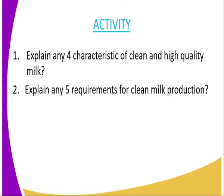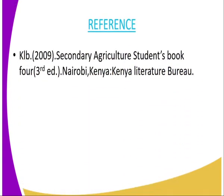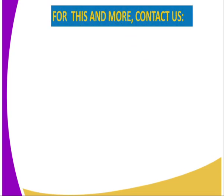We have come to the end of today's lesson, and I am going to mark the end by giving you this assignment. The first question: explain any four characteristics of clean and high quality milk. Number two: explain any five requirements for clean milk production. For reference, you can refer to the Secondary Agriculture Student Book 4, published by the Kenya Literature Bureau. For more information or to clarify something, you can reach us at Arim TV.